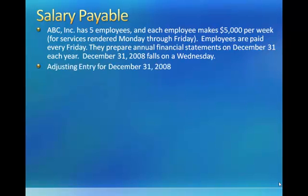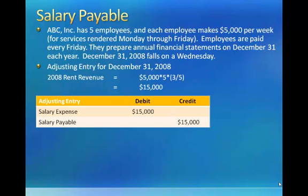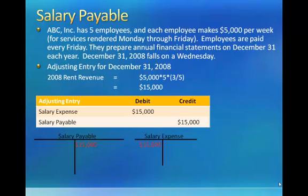The adjusting entry is calculated by taking $5,000 per employee times 5 employees, giving the weekly pay of $25,000. Since only three out of five workdays have been worked, employees have only earned $15,000 of the $25,000. Therefore, the adjusting entry is a debit to salary expense of $15,000, reflecting the expense that helped generate revenue for those three days, and a credit to salaries payable of $15,000 to reflect the liability. Salaries payable is the permanent balance sheet account, and salary expense is the temporary income statement account.